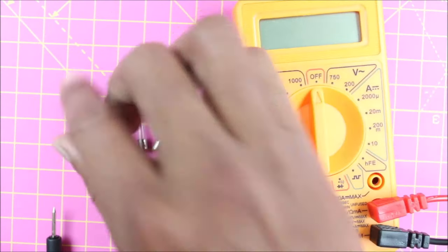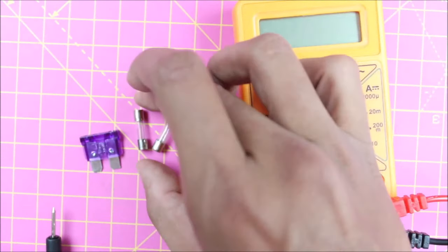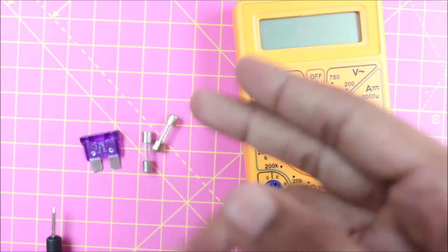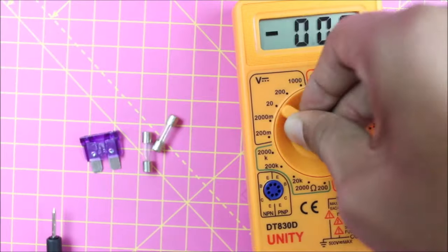A fuse is nothing but conductive plates connected together using a thin wire. Now I'll show you how you can use a multimeter to check if your fuse is in a working condition.